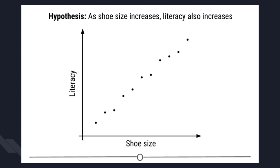Let's do an example. Suppose I have a hypothesis that as shoe size increases, literacy also increases. I would choose a measure of literacy — for example, reading fluency — as my dependent variable, depending on an individual's shoe size. To answer this question I will design an experiment in which I measure the shoe size and literacy level of 100 individuals. Sample size is the number of experimental subjects you will include in your experiment, and there are ways to pick an optimal sample size that you will cover in later courses.